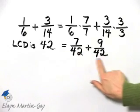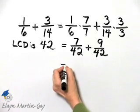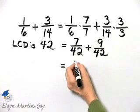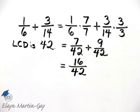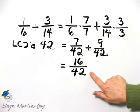Now I'm adding. The denominators are the same. So it's 7 plus 9 which is 16 over a common denominator of 42. That's my sum.